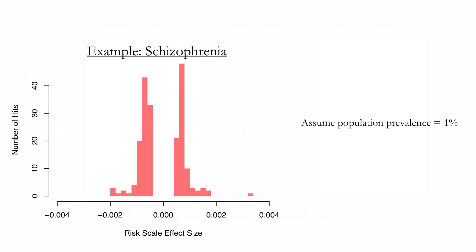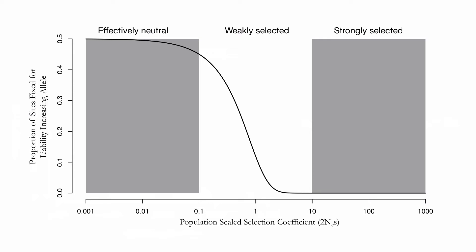As an example of how this theory can be applied, I want to ask whether the genetic architecture of schizophrenia as uncovered by GWAS so far is at least qualitatively consistent with long-term mutation selection balance. Here I'm showing the distribution of risk-scale effect sizes for genome-wide significant mutations identified in the GWAS for schizophrenia, assuming the long-term ancestral prevalence was equal to the modern prevalence in Western environments of about 1%. Positive effects are cases where the derived allele increases risk; negative effects represent cases where the derived allele is protective. The fact that we see both risk-increasing and protective derived mutations suggests we must be in the effectively neutral regime, where mutations are able to fix in either direction relatively freely.